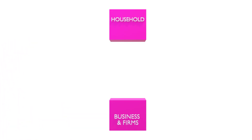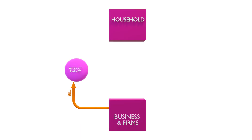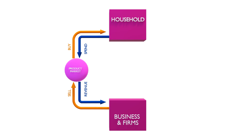We begin with the base sectors: households and businesses and firms. Businesses and firms sell products in the product market, and households consume. Since it is not free, households have to pay, and businesses in turn earn revenue. However, this is not a sustainable flow because sooner or later households will deplete their cash.